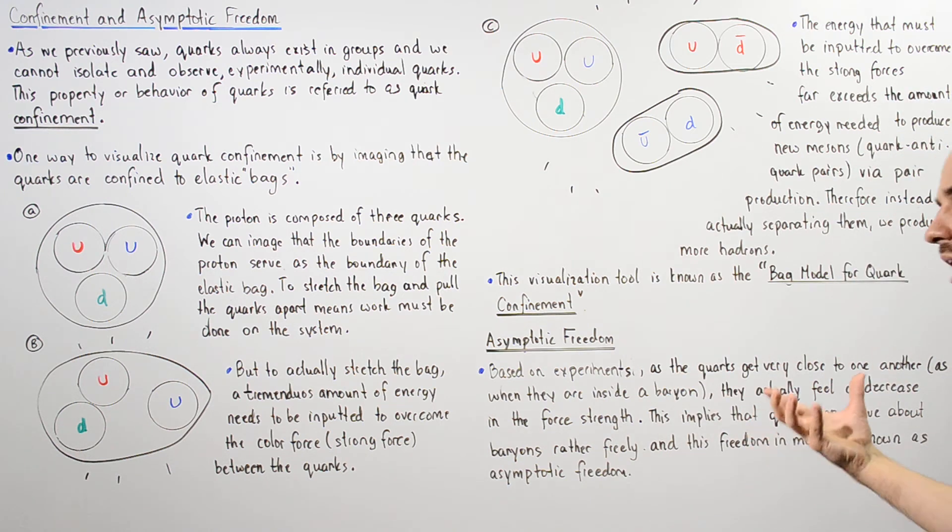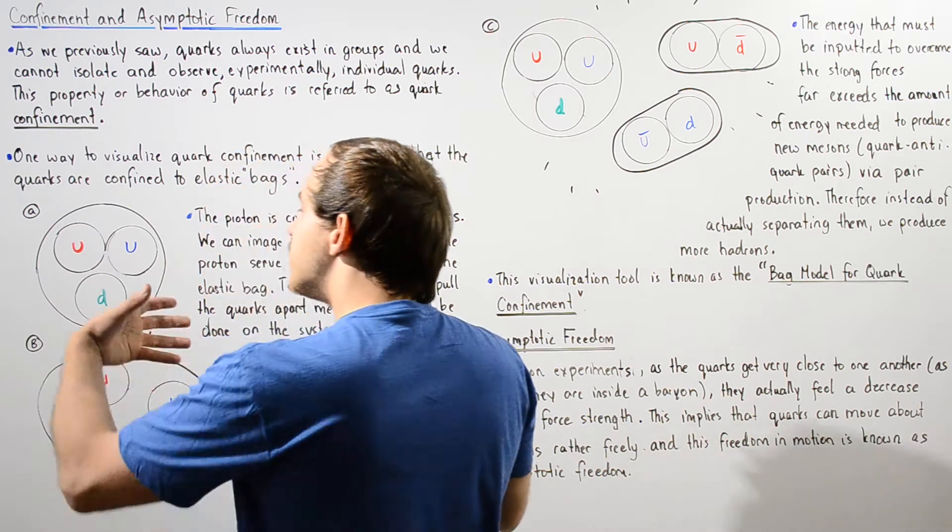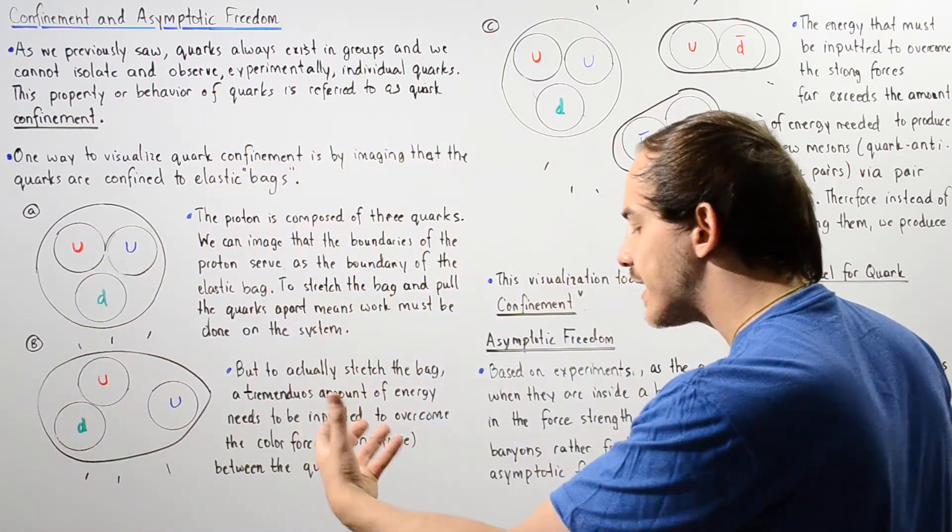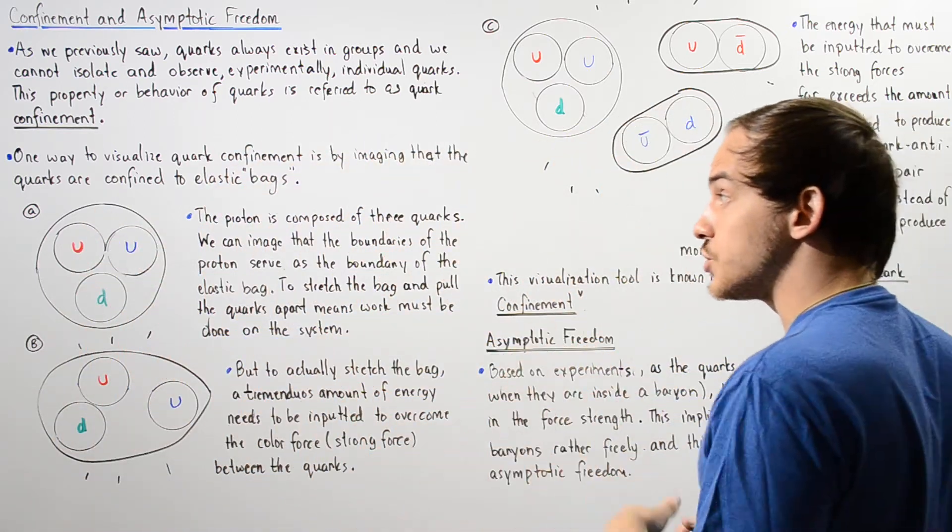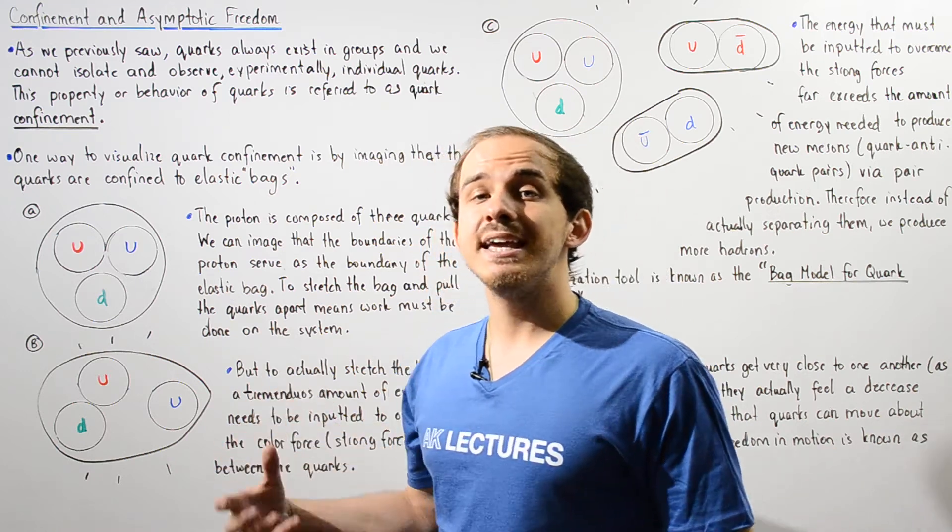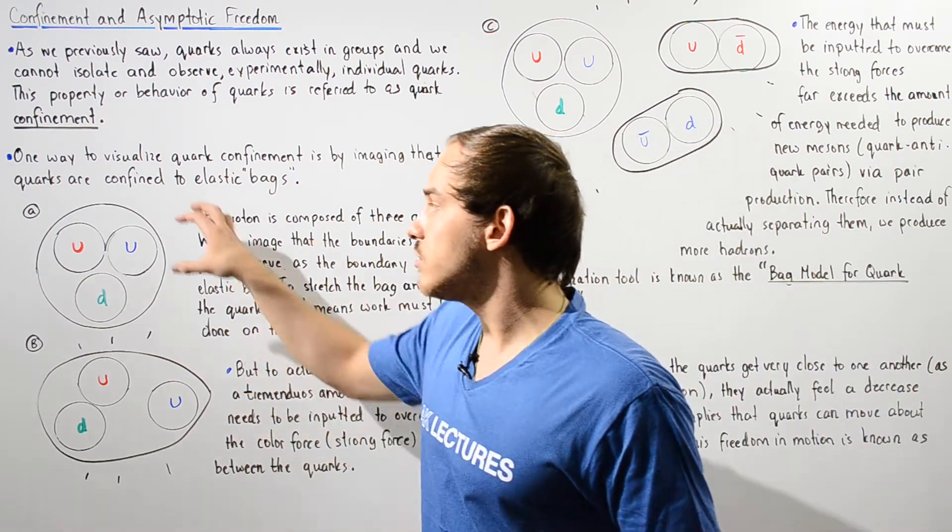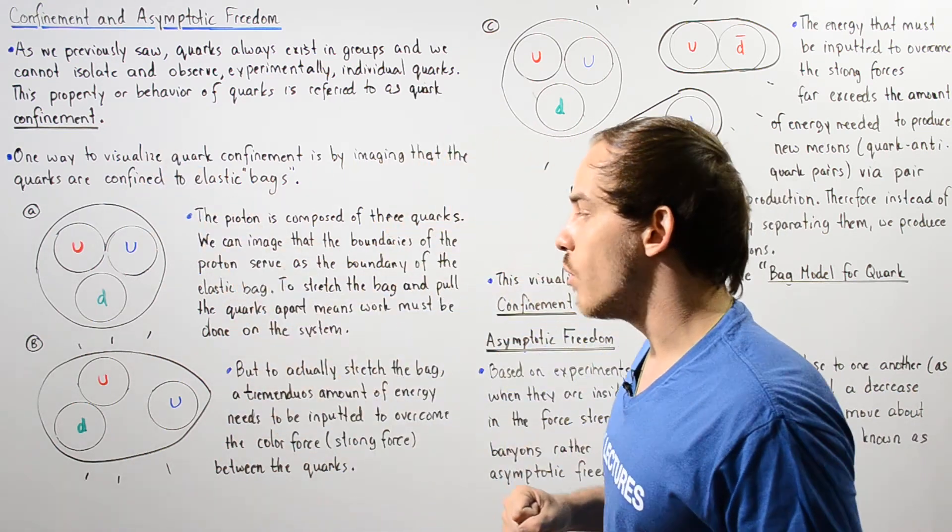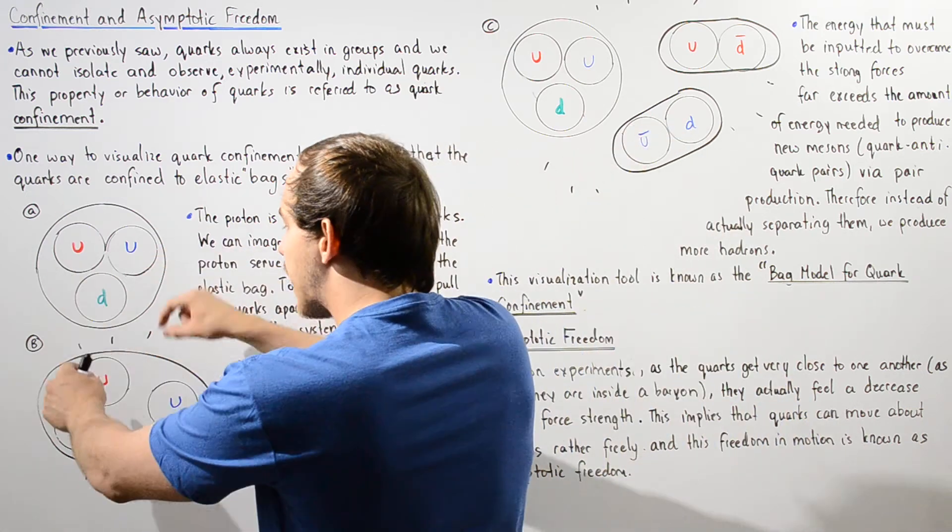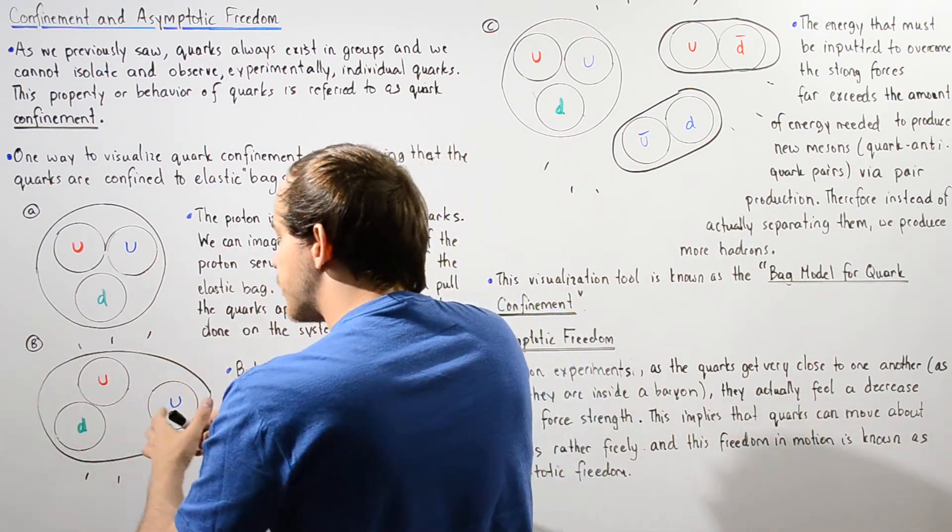It is a result of the fact that as they get close, that color force, that strong force that holds those quarks together begins to decrease, and that allows these quarks to move around. Of course, when we separate them, this force increases and they want to snap back together.